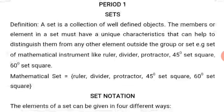Now, before we go, let us look at the definition of a set. A set is a collection of well-defined objects. The members or elements in a set must have its unique characteristics that can help to distinguish them from any other elements outside the group or set. For example, a set of mathematical instruments like ruler, divider, protractor, 45 degree set square, 60 degree set square, and so on.